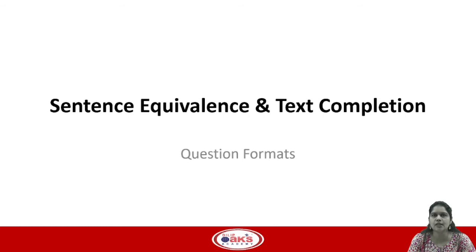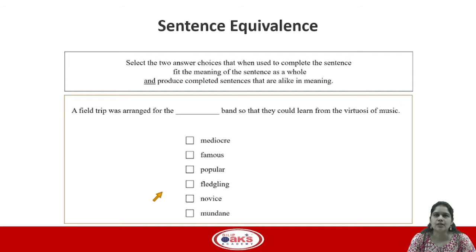Now let's look at sentence equivalence and text completion in terms of question formats. In sentence equivalence, you have a single blank question and they ask you to choose 2 answer choices out of 6 which are alike in meaning, or which create 2 sentences alike in meaning. With this question type you will always see 6 options and you will always see checkboxes.